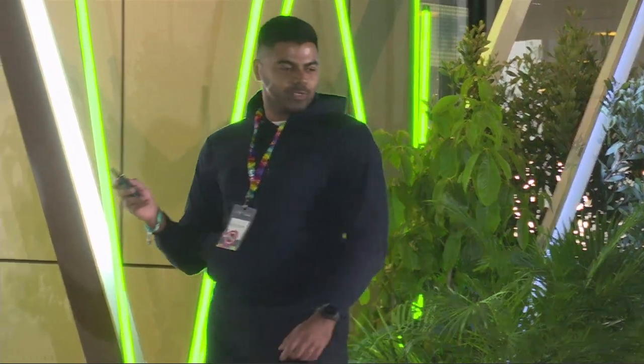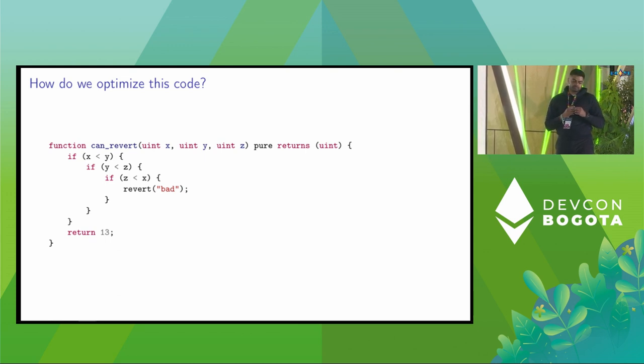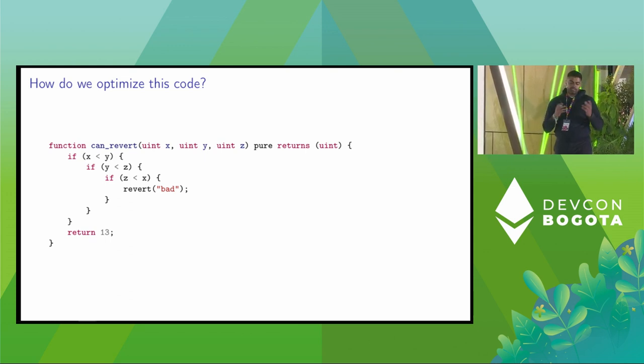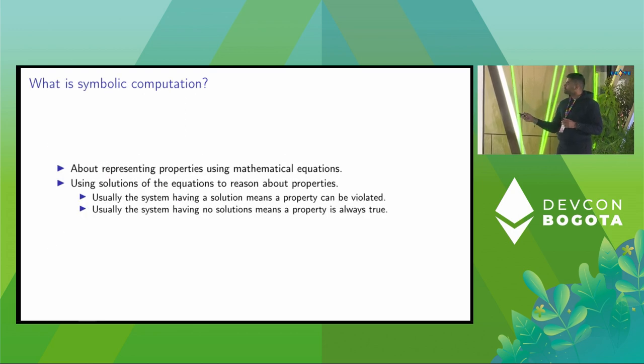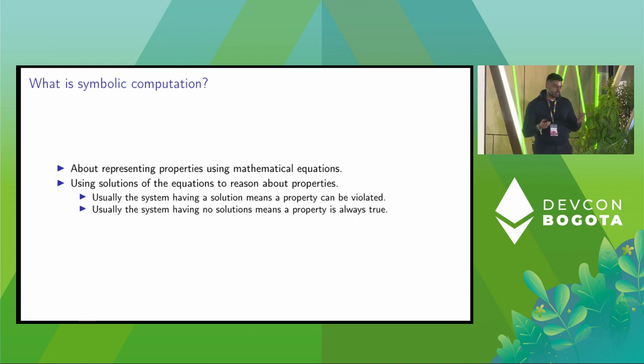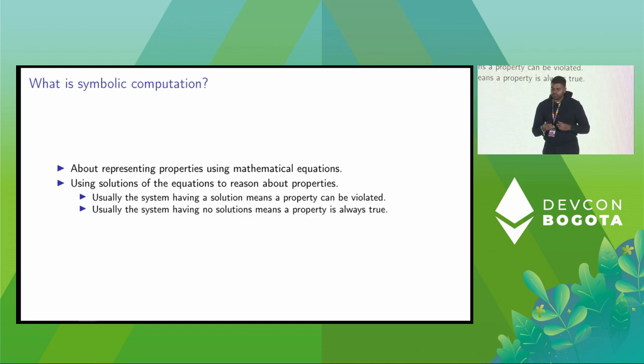So what he's saying is that this branch is not reachable for whatever reasons. We're going to figure out how we will symbolically figure this out and how we can use symbolic computation to find that this branch is unreachable. Symbolic computation is about representing properties using mathematical equations, and we use the solutions of these equations to reason about the properties we started with.